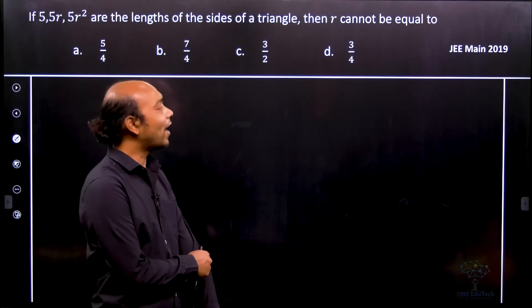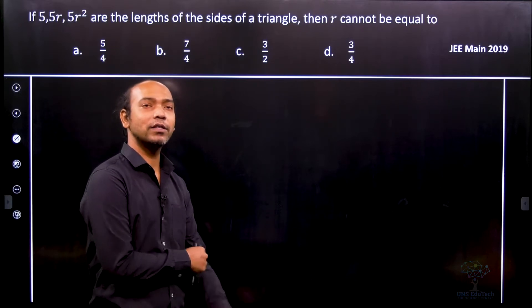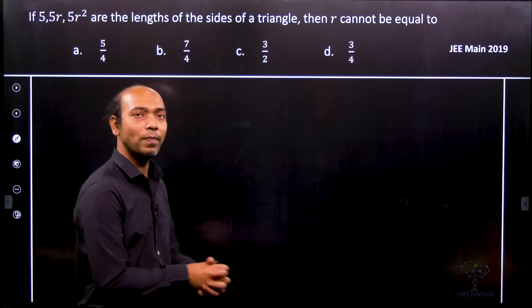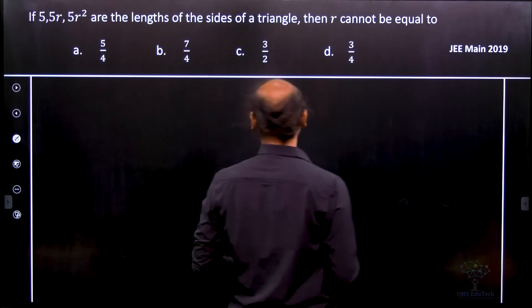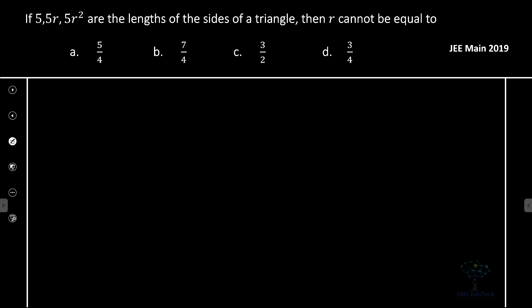Therefore, 5, 5r, and 5r² will form a triangle only when the sum of the two sides is greater than 5r². That implies that 1 + r is greater than r², which implies that r² - r - 1 is less than 0.